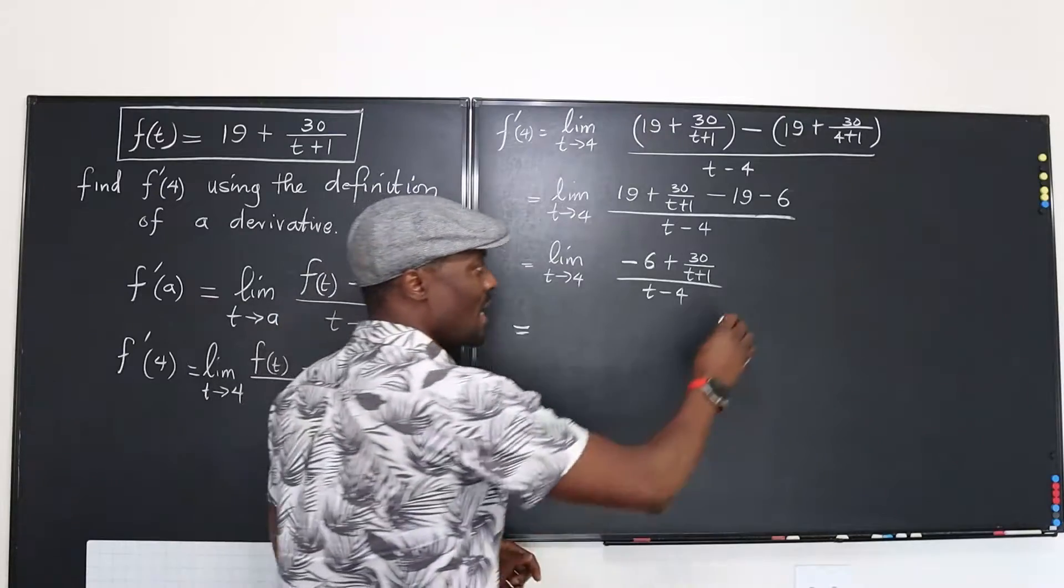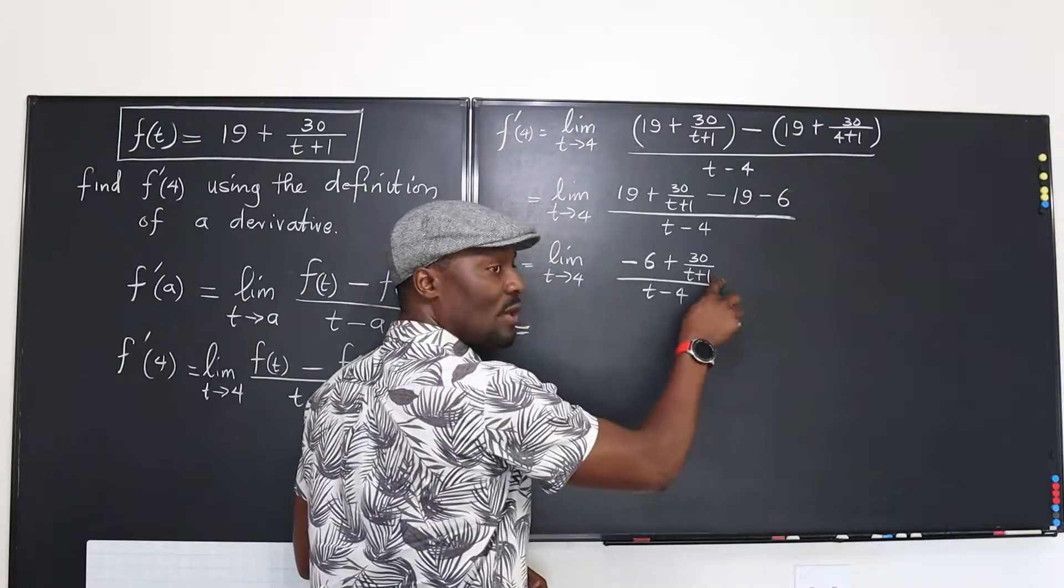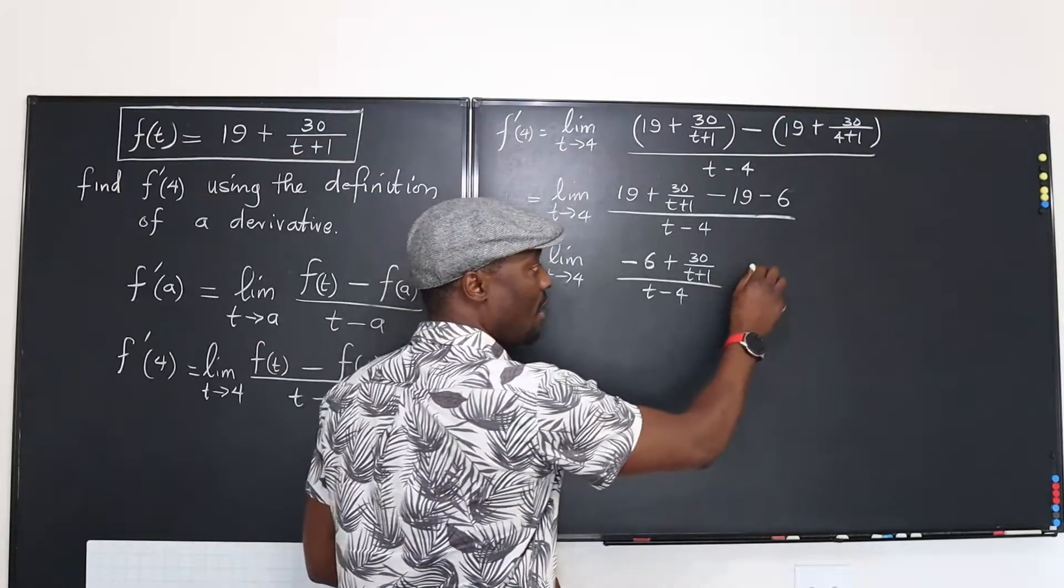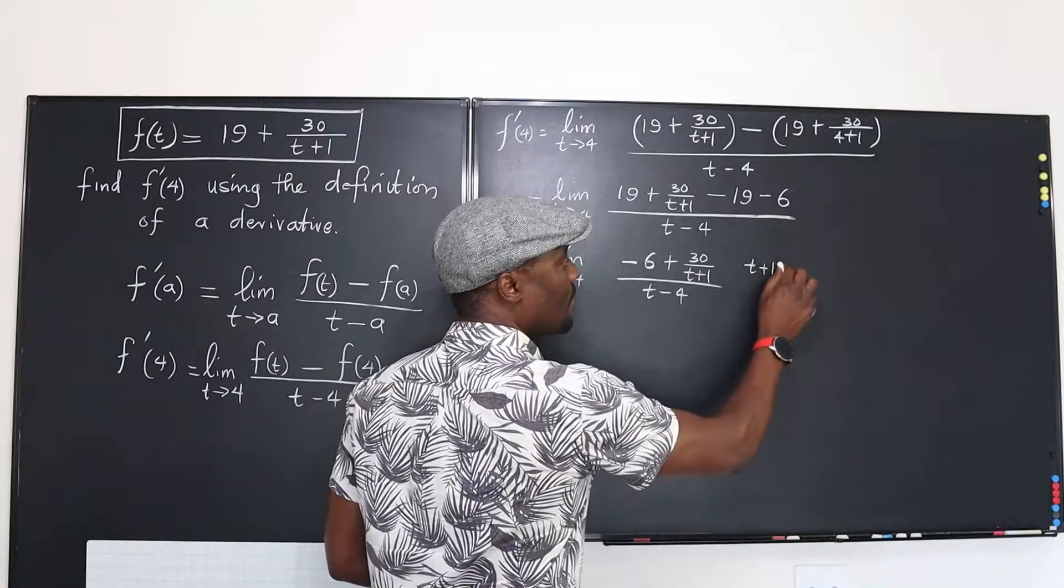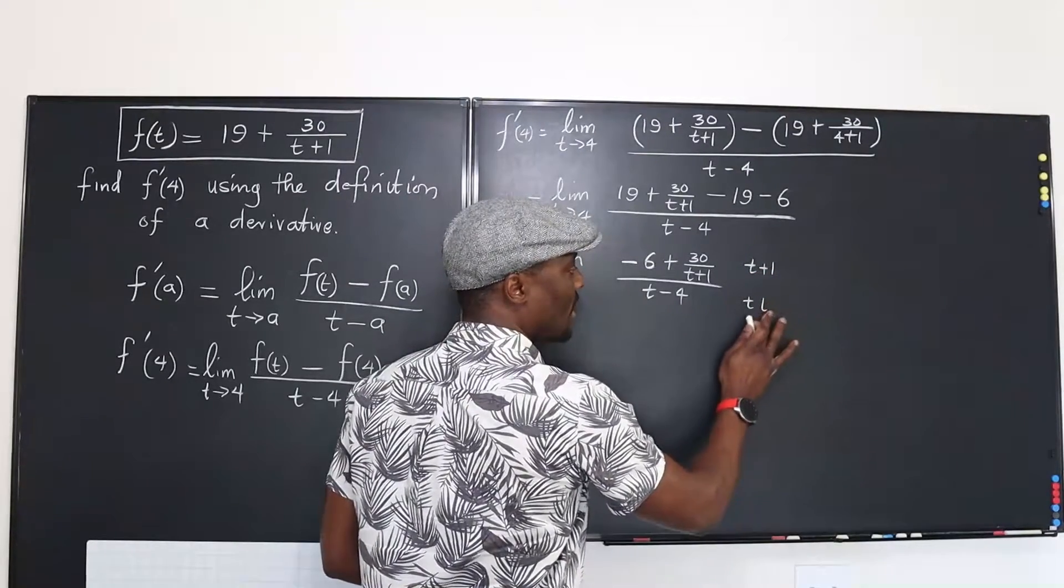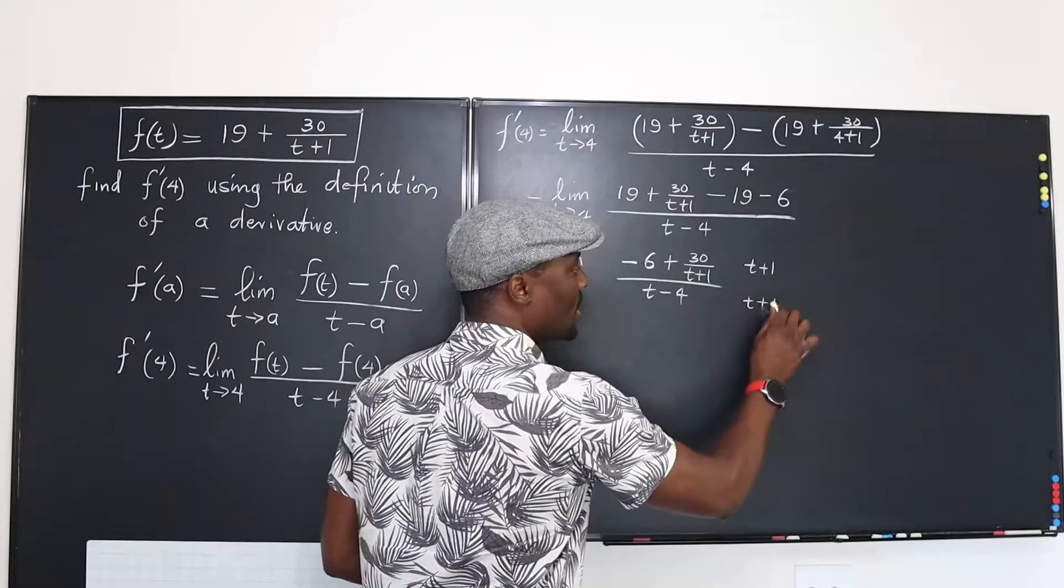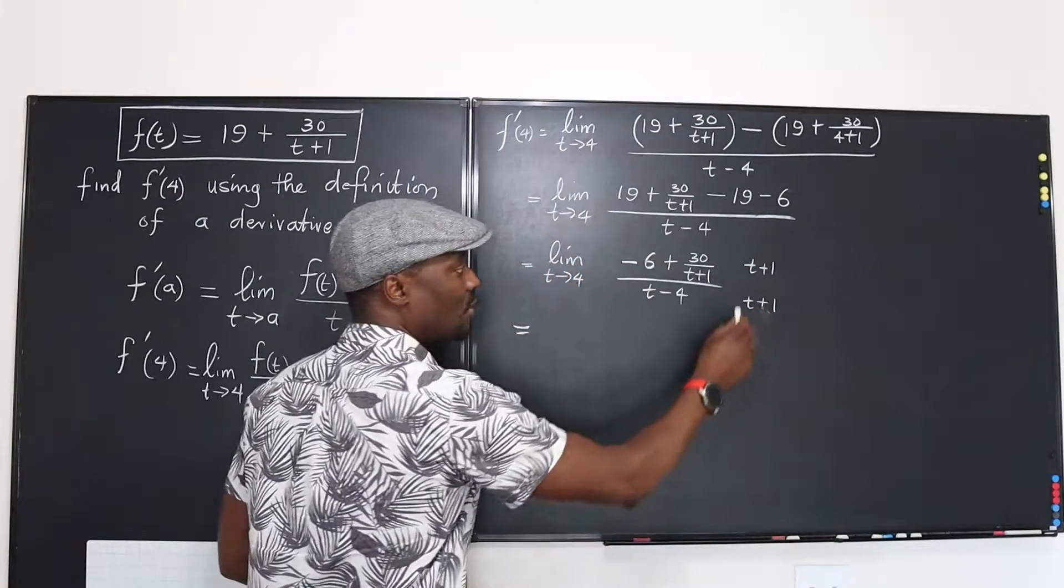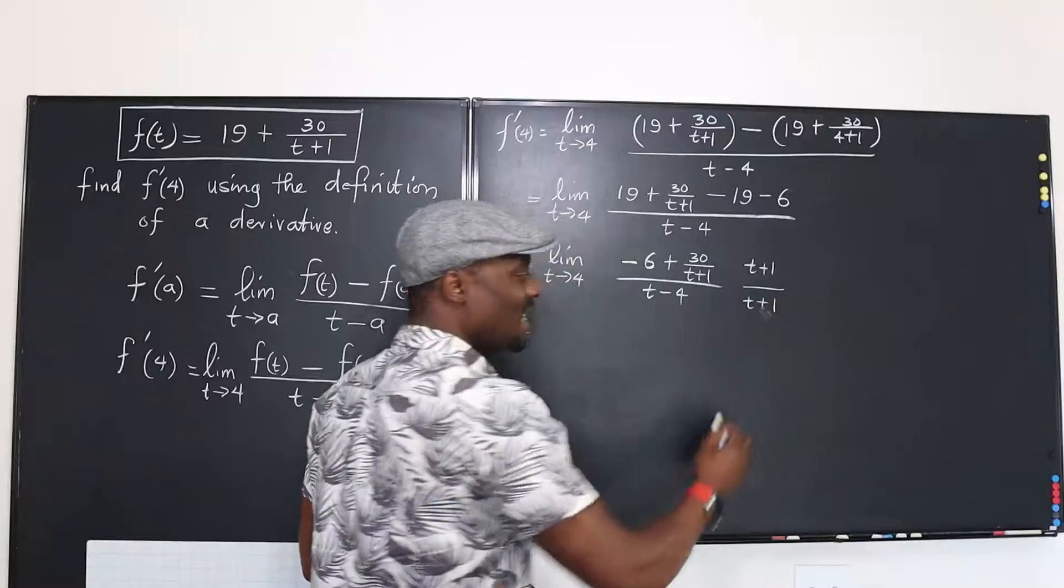So remember the best thing to do is to multiply the top by what you're trying to get rid of in the top, which is t plus 1. Also multiply this by t plus 1. So you want to multiply both top and bottom by t plus 1. So you didn't change anything.